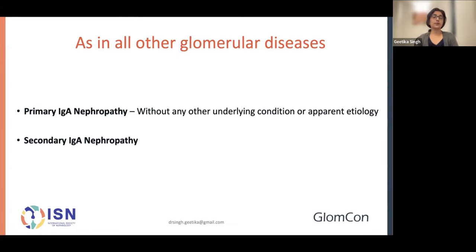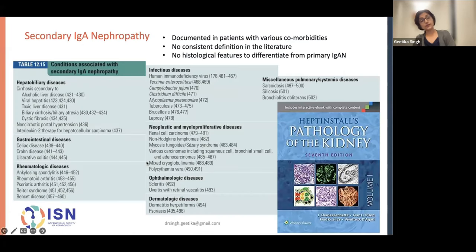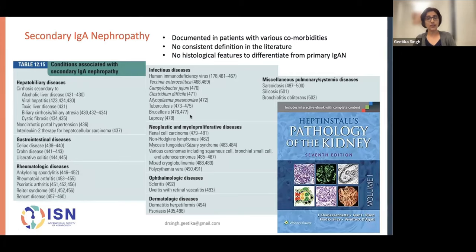We say that it is primary IgA nephropathy when we don't find any other underlying condition or apparent etiology, and that it is secondary IgA nephropathy if it has some sort of underlying condition which we would connect to the disease. There's a whole long list from Heptinstall's 7th edition — number one is hepatobiliary diseases, then GI diseases, rheumatological diseases, and a whole host of infectious and neoplastic diseases. However, there is no consistent definition in literature and no specific histological features to differentiate from primary IgAN.